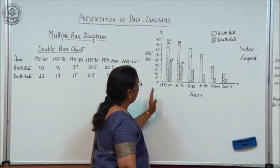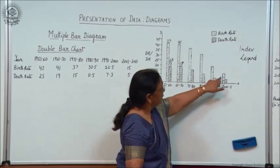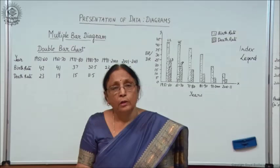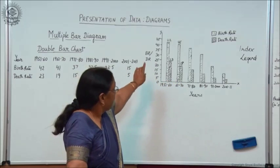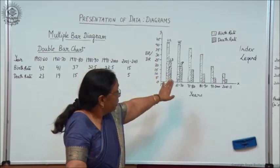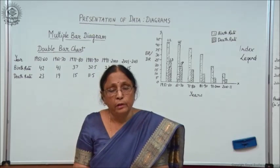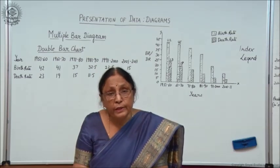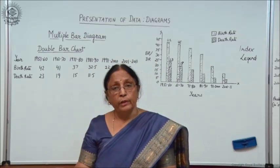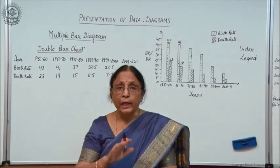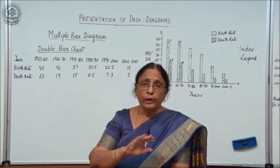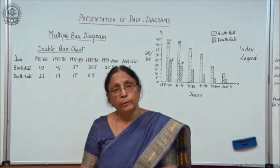Two bars are joined together to make a set of data. With this type of distribution you can easily make out that birth rate is high and what the death rate is. You can compare across different years — birth rate has declined and side by side death rate has also declined. With this diagram you can analyse that birth rate was high in 1951 and declining until 2001 to 2011.